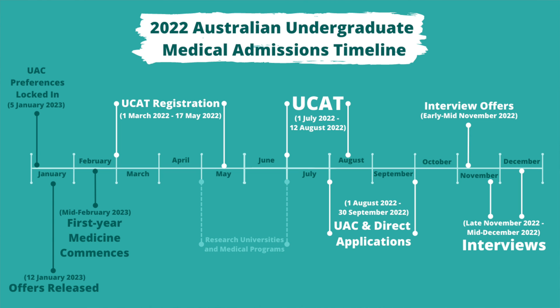The first big ticket item is the UCAT. Applications to sit the UCAT open on the 1st of March and they close on the 17th of May. The UCAT itself is then sat between the 1st of July and the 12th of August. Following on from the UCAT, we then have UAC applications and applications direct to the university. Interviews are then offered on a competitive basis in early November, determined by your UCAT scores. The interview period generally runs from the end of November through to mid-December, although some unis are still interviewing in January, before you finally lock in your preferences in January and offer rounds are made. If you're lucky enough to get an offer to study medicine, you'll then start somewhere in mid-February.